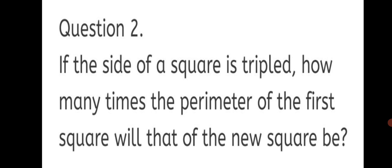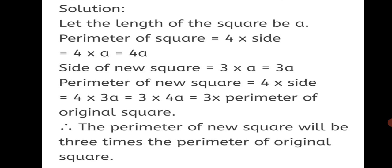Question 2: If the side of a square is tripled, how many times the perimeter of the first square will the perimeter of the new square be? Let the side of the original square be A. Perimeter of the original square equals 4A. The side of the new square is tripled, so it becomes 3A. The perimeter of the new square equals 4 times 3A, which equals 3 times 4A — that is, 3 times the perimeter of the original square. Therefore, the perimeter of the new square is 3 times the perimeter of the original square.